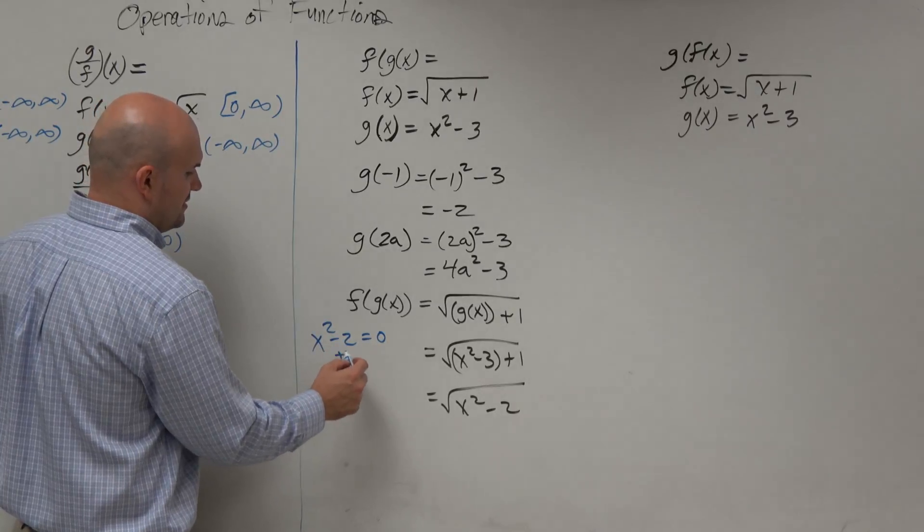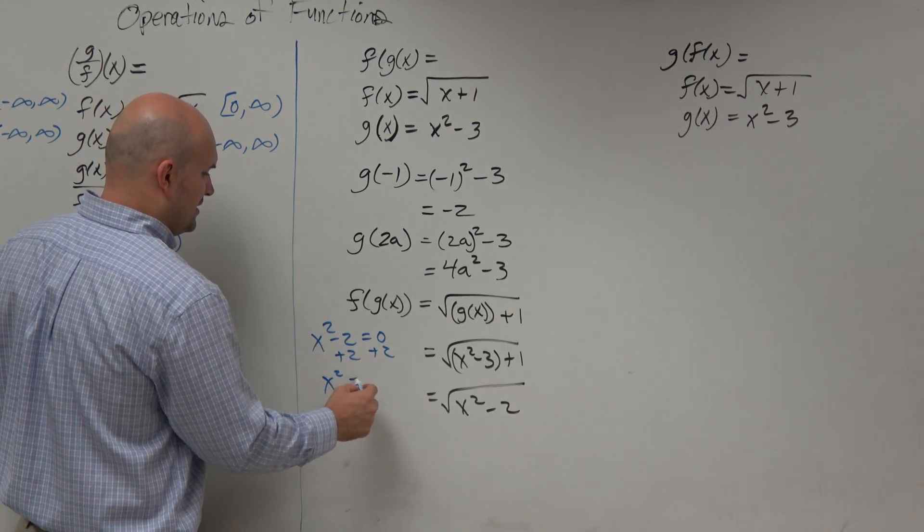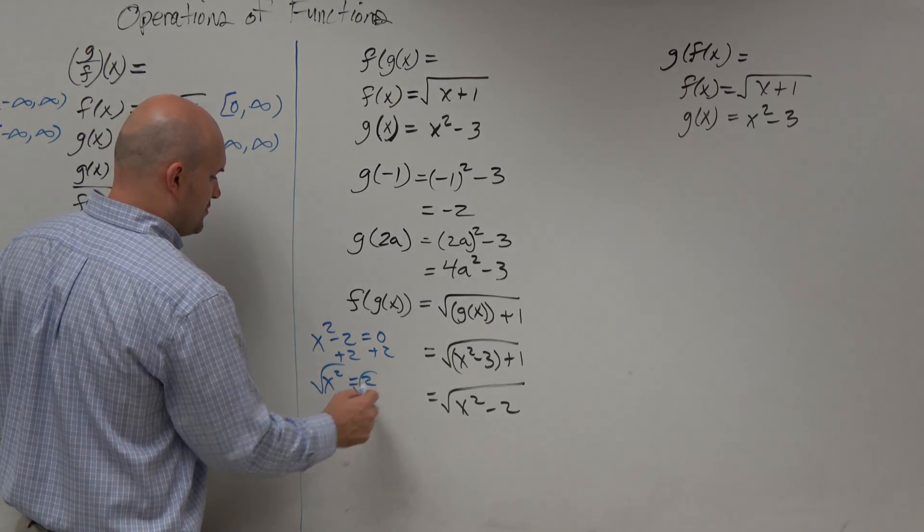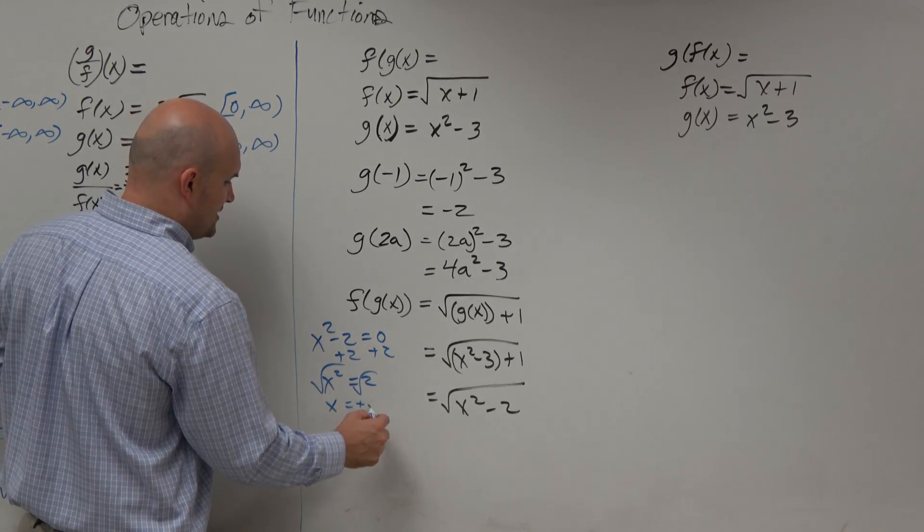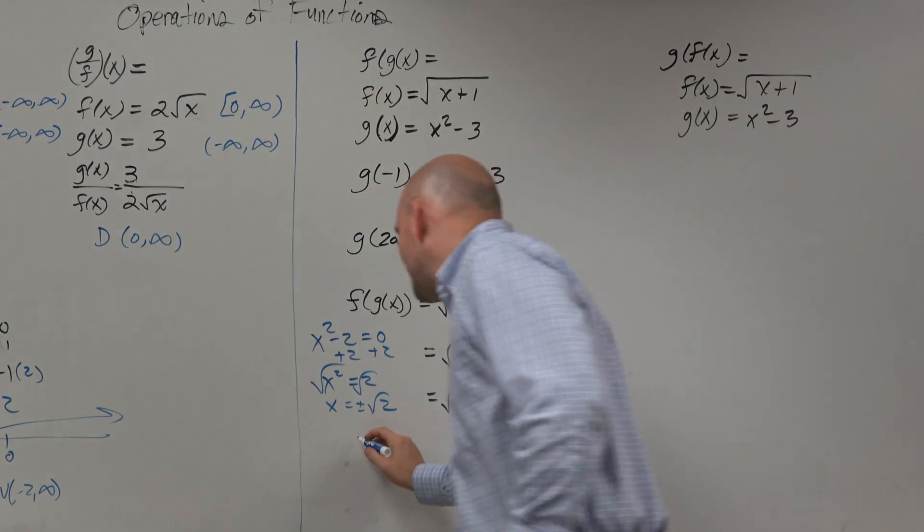So this is going to be, all right, just x squared is equal to 2, square root, square root, x equals plus or minus square root of 2. Those are the x-intercepts. If you think about x squared minus 2, what's happening with it?